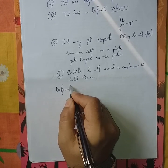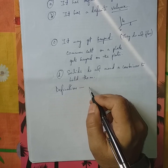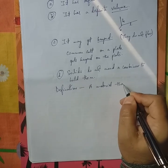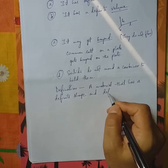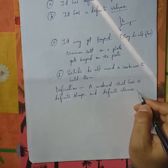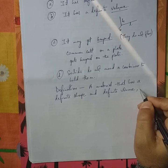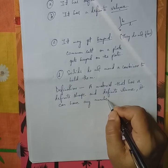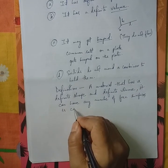So, finally, the definition of solid is what? A material that has definite shape and definite volume. Let us write: a material that has definite shape and definite volume and it can have any number of free surfaces. So, it is called solid.